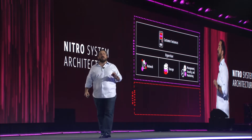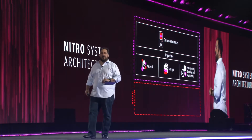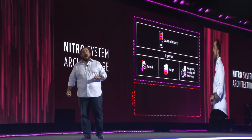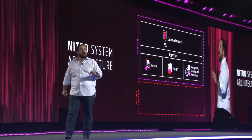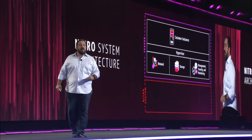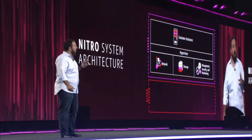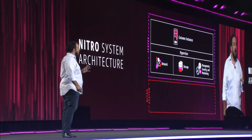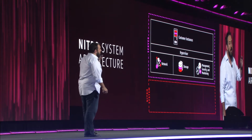This brings us to the Nitro system architecture. This was our vision for the future of the EC2 host. The idea is rather straightforward: rather than run those functions on the server hosting the customer instance, we could move them to specialized hardware. We call this the Nitro system.